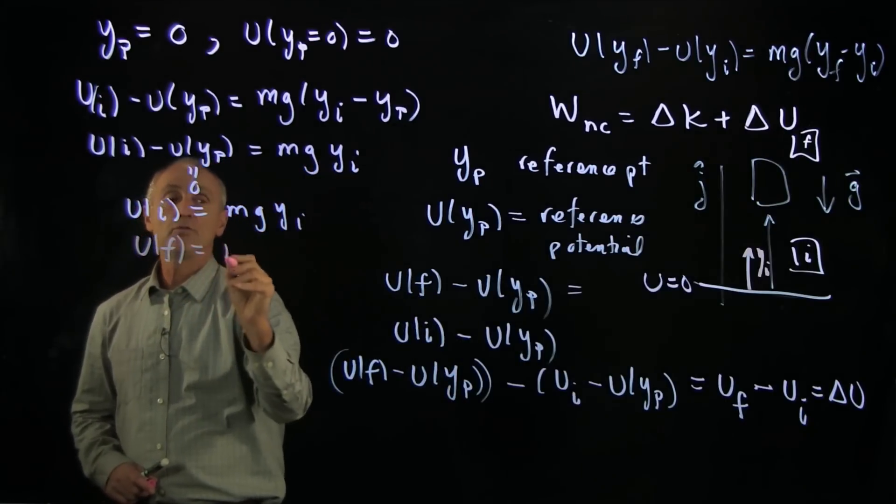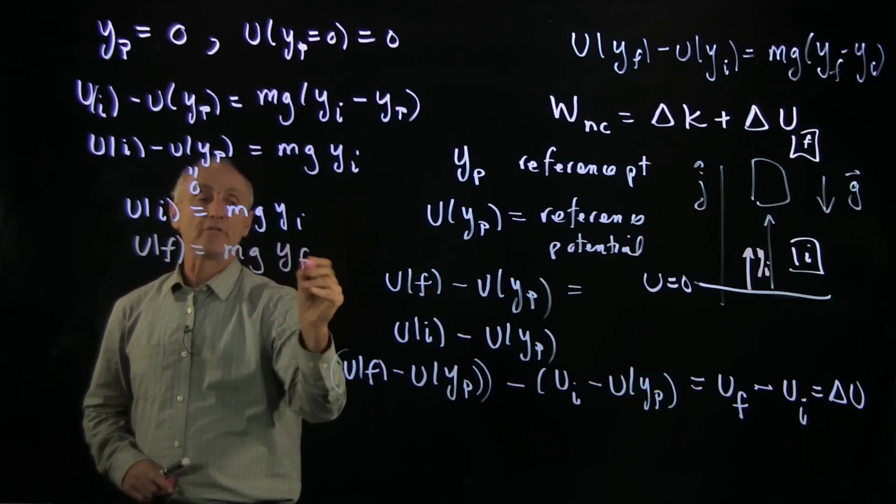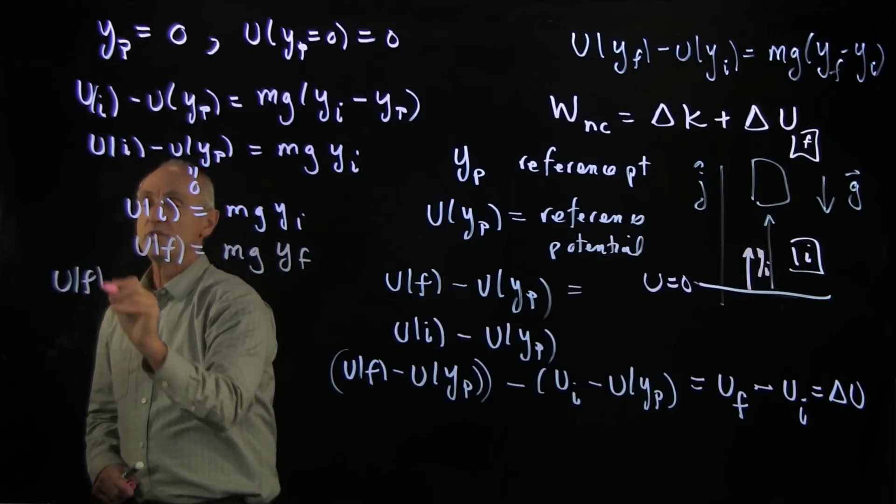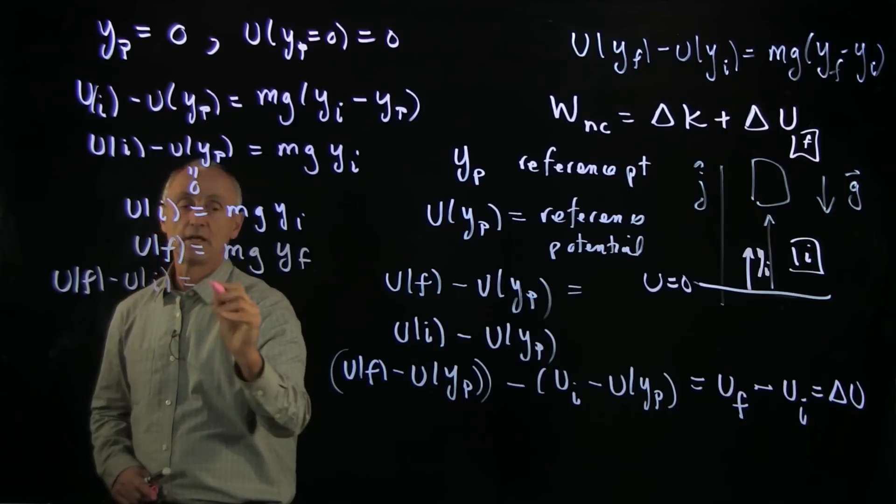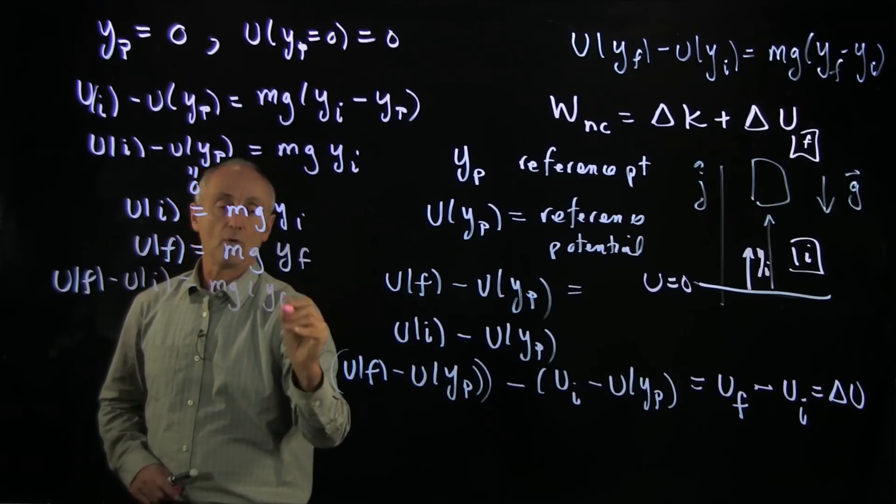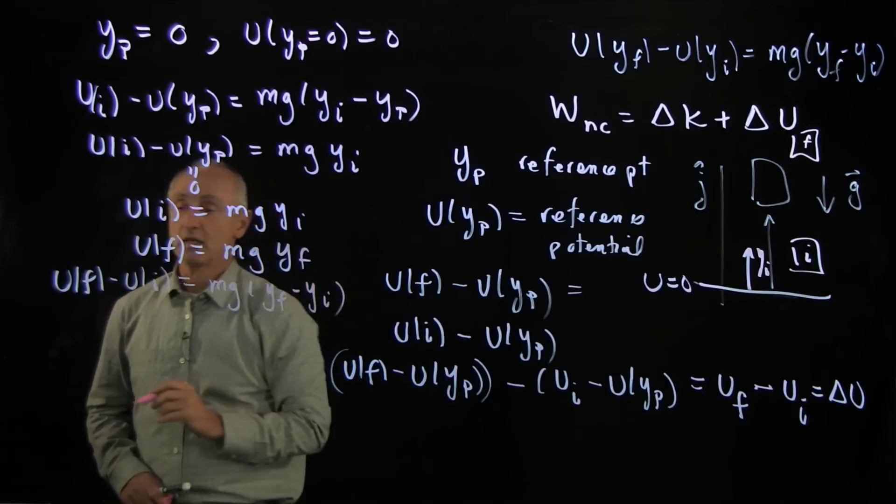In a similar way, we have u final is mg y final. And so we see we recover what we expect. This is just mg y final minus y initial.